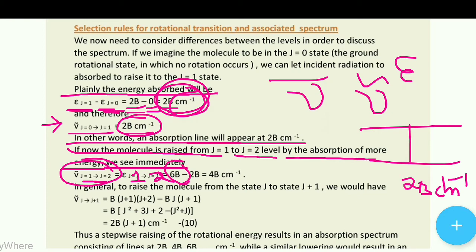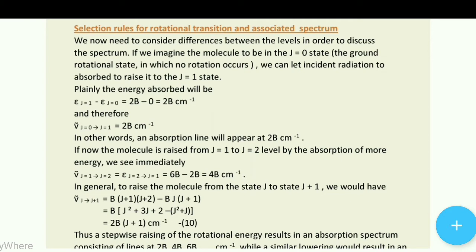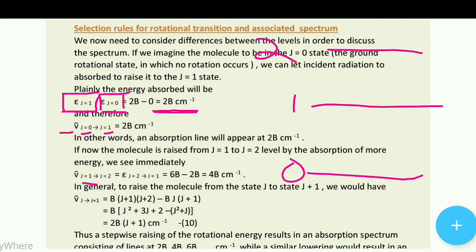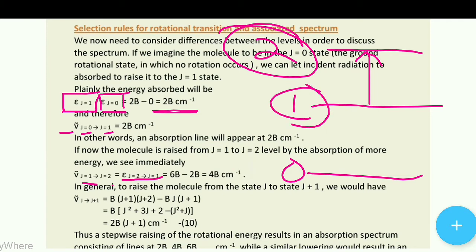The energy of the J=2 state is 6B, minus the J=1 state energy which is 2B. We must remember that the energy absorbed equals the energy of the next state minus the energy of the previous state. For the transition from J=1 to J=2, the energy of the J=2 state is 6B and the J=1 state is 2B, giving us 4B cm⁻¹.